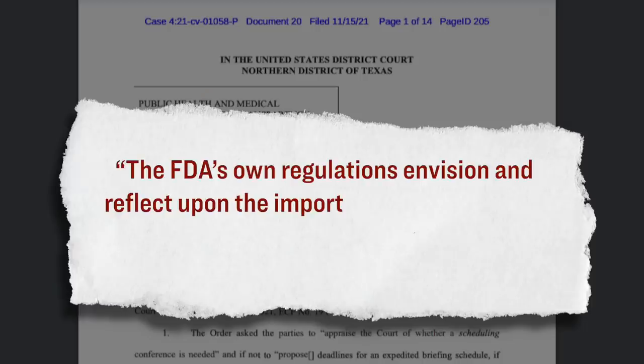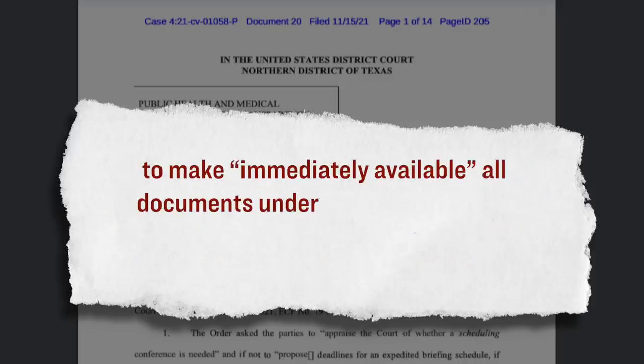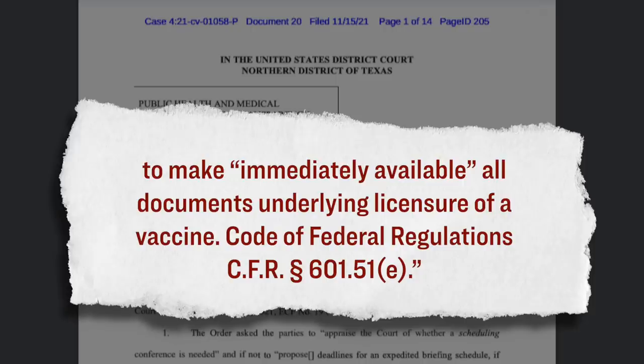Essentially, the argument that this group of medical doctors is making is that the FDA took only 108 days to conduct their entire review, and that all the documents pertaining to the review process should be made public for the sake of transparency. They continue by saying that being transparent is actually a requirement according to the FDA's own guidelines. Quote: The FDA's own regulations envision and reflect upon the importance of making this information public as soon as a vaccine is licensed. Its regulations provide that it is to make, quote, immediately available all documents underlying licensure of a vaccine. That comes from the Code of Federal Regulations, subsection 601.51e.